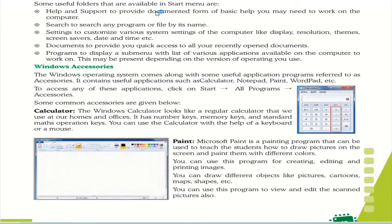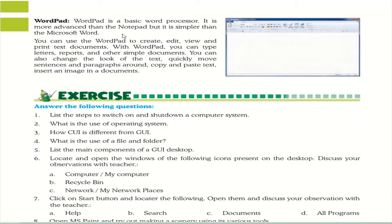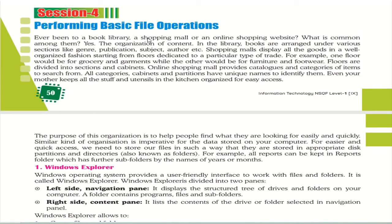There are various Windows accessories available — like calculator, notepad, and paint. You just need to click on Start, then All Programs, then Accessories. The calculator is used to calculate using various number keys. Paint is used to draw pictures on screen, and can be used for creating, editing, and printing images. WordPad is a basic word processor where you can create, edit, view, and print text documents. Now the next session is performing basic file operations.